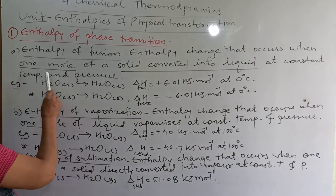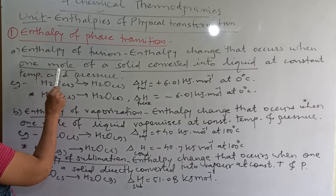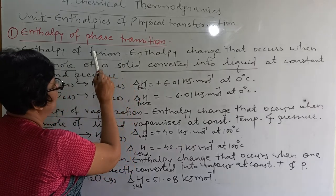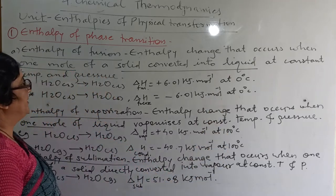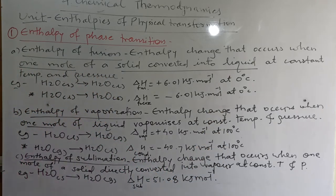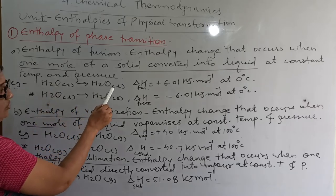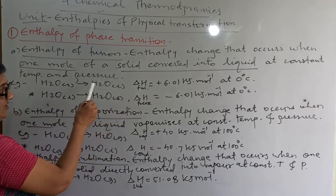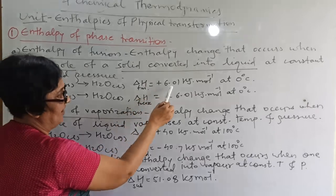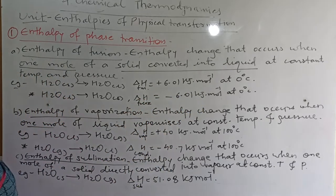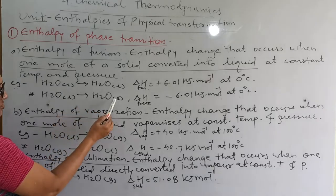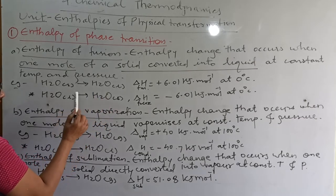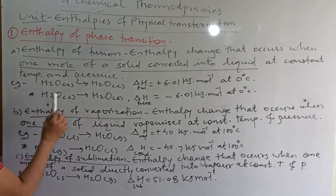The important condition is one mole. Fusion means conversion of solid into liquid at constant temperature and pressure. For example, H2O solid converted into liquid is fusion, and the value is given at constant temperature. On the opposite side, when liquid is converted into solid — instead of solid to liquid, it is liquid to solid — what is the definition?